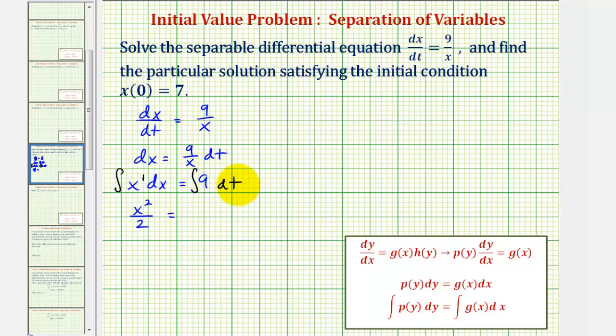So we have equals the integral of 9 with respect to t would be 9t plus a constant of integration, which we'll call c₁, which again includes the constant from the left and the right.